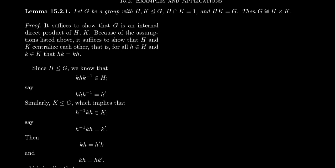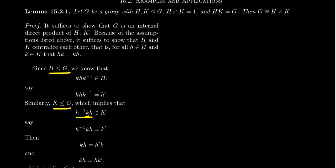Why do the elements of H and the elements of K centralize each other? I'm not saying H is abelian or K is abelian, but our assumptions guarantee they will commute. Since H is a normal subgroup, it's closed under conjugation. If I take H in H and conjugate it by an element from K, that falls back inside H. So KHK⁻¹ equals H prime for some other element H prime in H. Similarly, K is a normal subgroup, so if you conjugate K by H⁻¹, this falls inside K — there's some element K prime in K such that H⁻¹KH equals K prime.